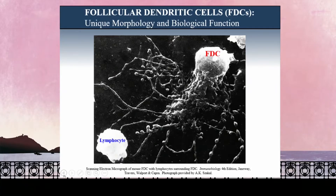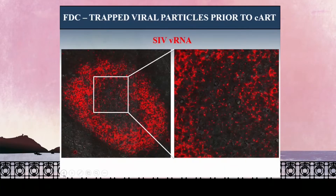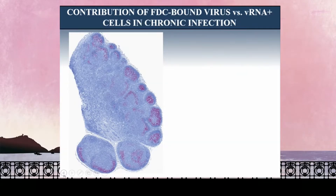The reason virus accumulates within these structures is due to the biology of follicular dendritic cells. This is a scanning electron micrograph of an FDC, and you can appreciate these very long dendritic processes. The purpose of these cells is to bind and retain immune complexes for long periods of time to maintain B cell memory. But in this disease, these cells are loaded with virus and trapped for extended periods of time on this network. Using our new in situ hybridization approach, you can appreciate the abundance of virus trapped in just one follicle within one lymph node.